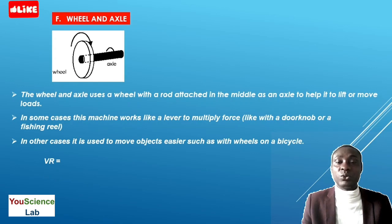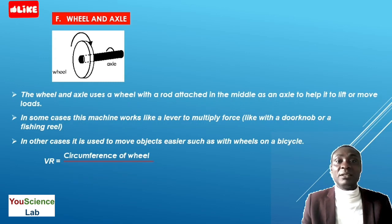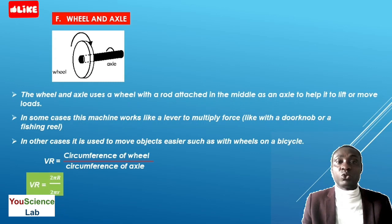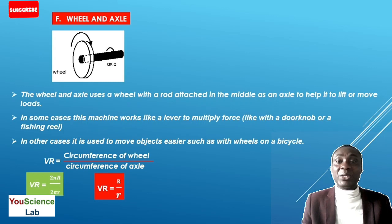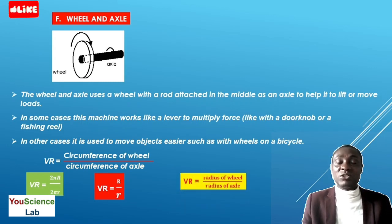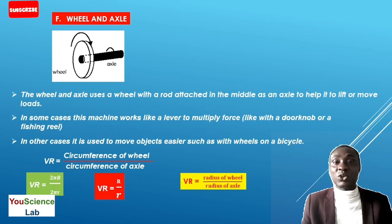The velocity ratio of the wheel and axle is equal to the circumference of the wheel divided by the circumference of the axle. This simplifies to the radius of the wheel divided by the radius of the axle. So the velocity ratio of the wheel and axle equals R (radius of the wheel) divided by r (radius of the axle).